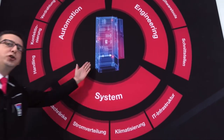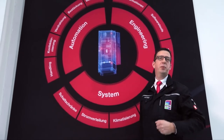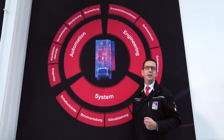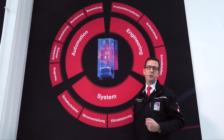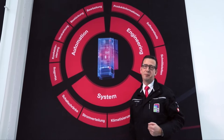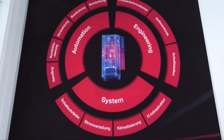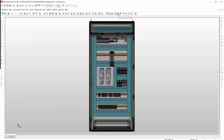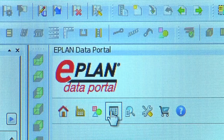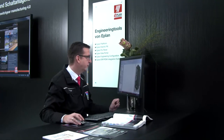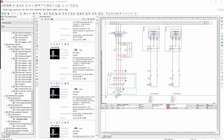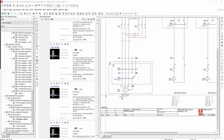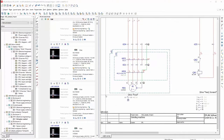The virtual prototype is the link between all process steps and will be created with engineering solutions from Rittal, EPLAN, and CDN. The electrical planning starts with the functional engineering using EPLAN Electric P8. The result is the circuit diagram and bill of materials.